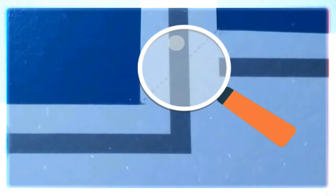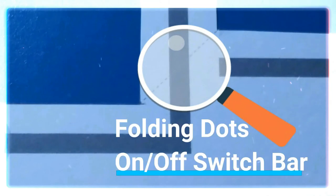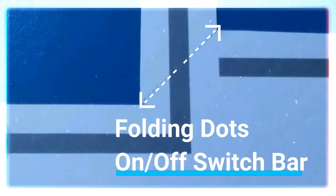We fold the switch bar from the folding dot track to make it operational as an on-off switch.